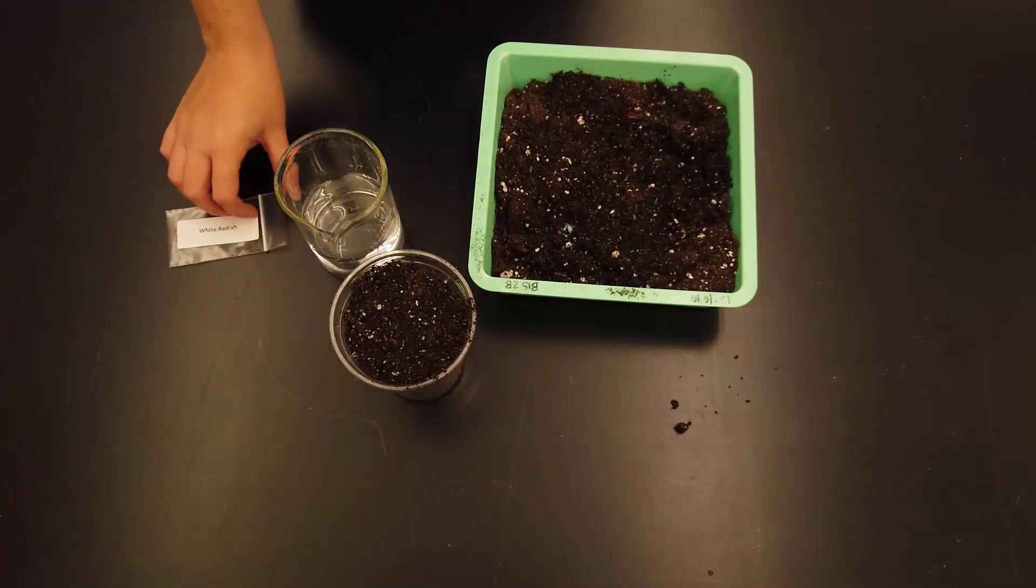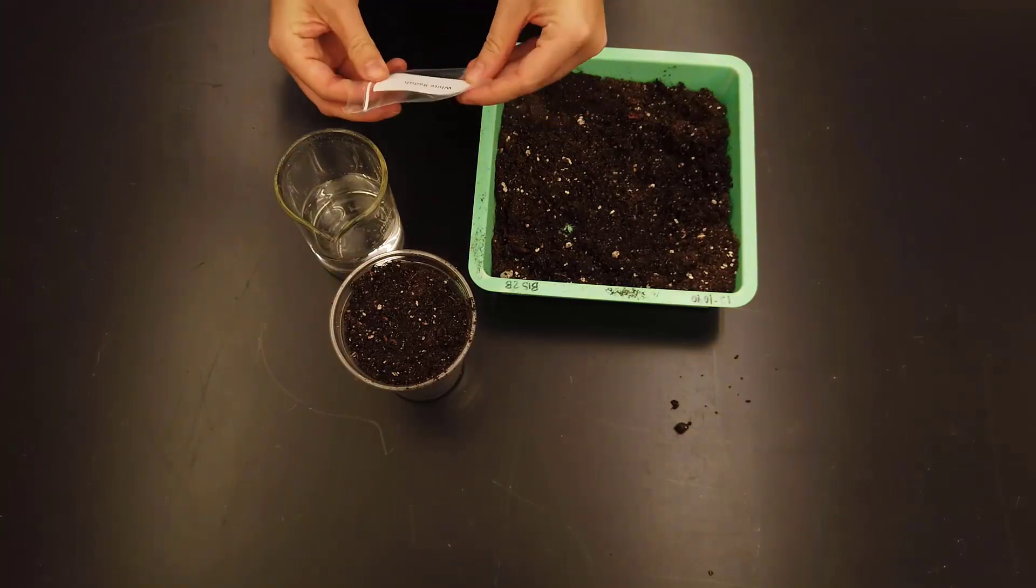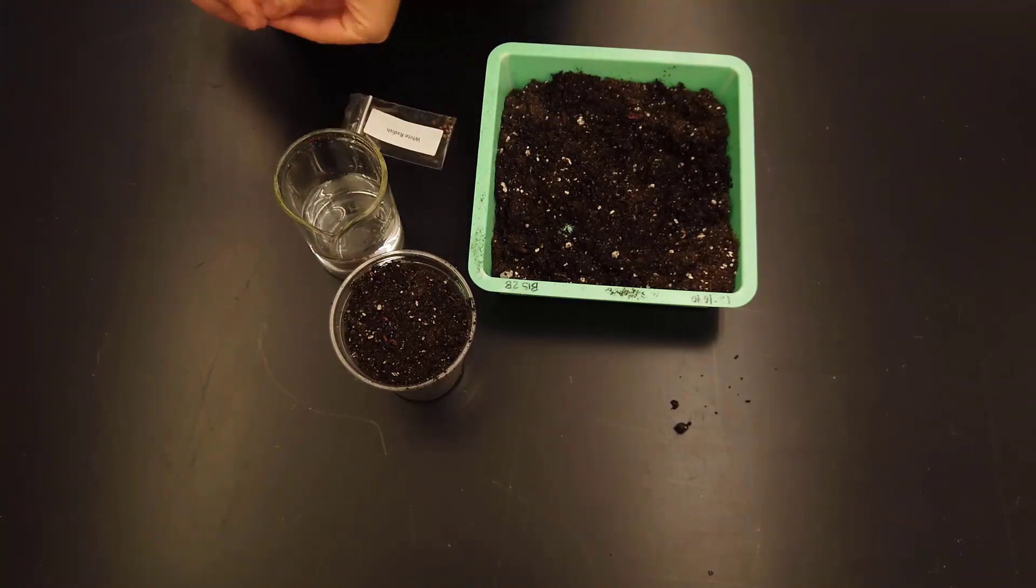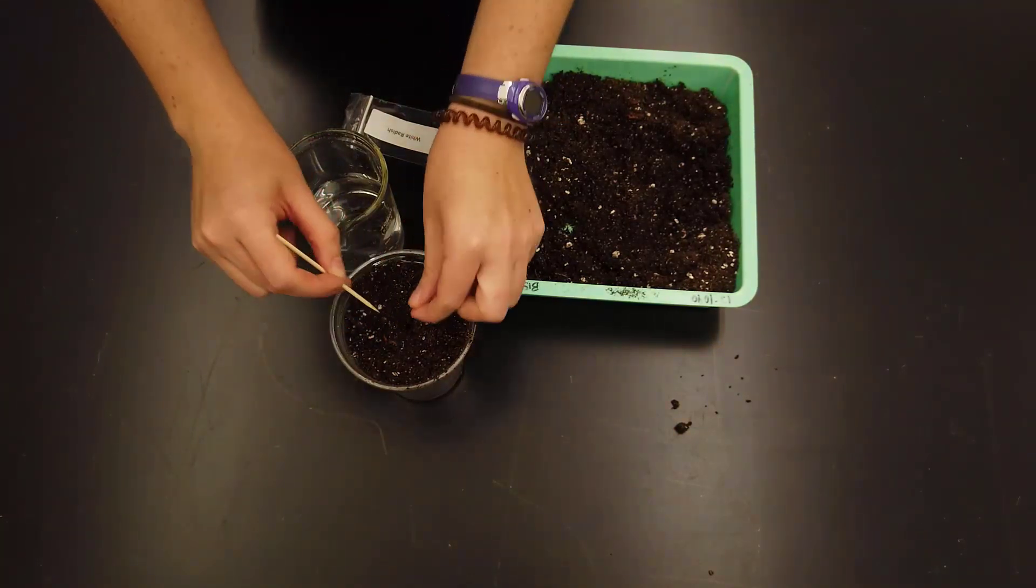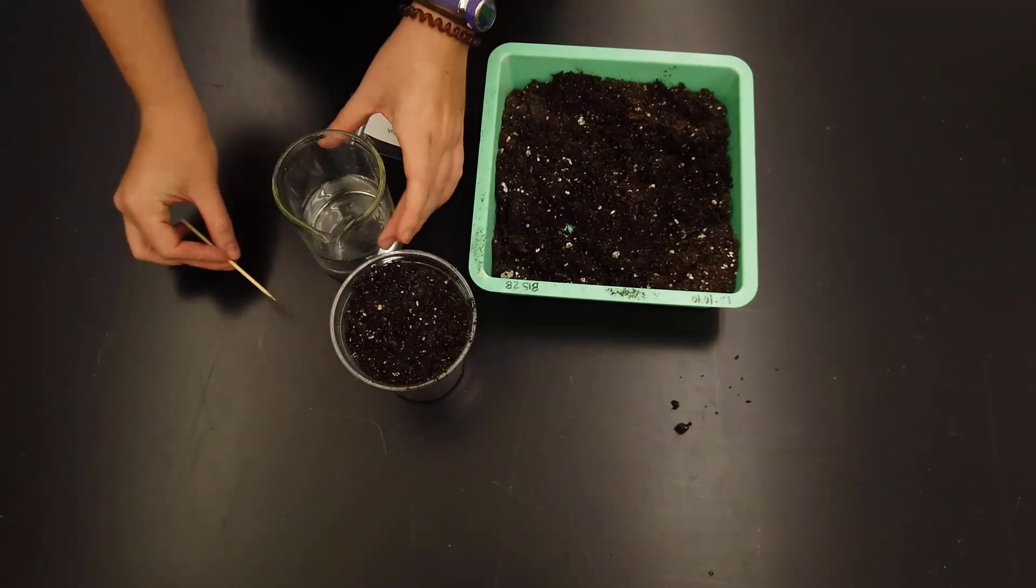Then, plant according to the treatment written on the cup. As with the other plantings, we'll dig a hole no deeper than one centimeter, plant the seed, cover it, and water it in.